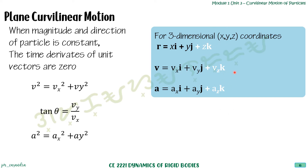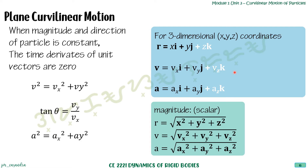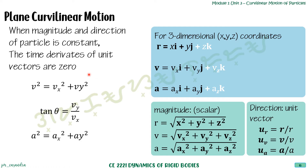Magnitudes are defined by the Pythagorean theorem: |R| = √(x² + y² + z²), |V| = √(vx² + vy² + vz²), |a| = √(ax² + ay² + az²). For direction, the unit vector of R = R/|R|, unit vector of V = V/|V|, unit vector of a = a/|a|.